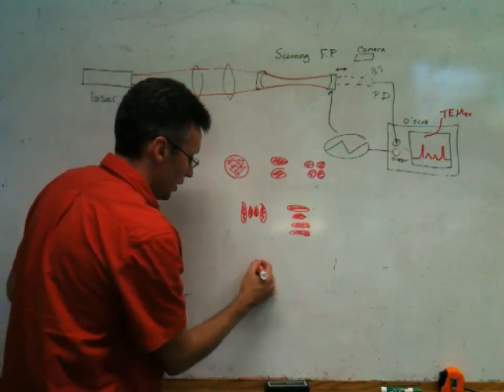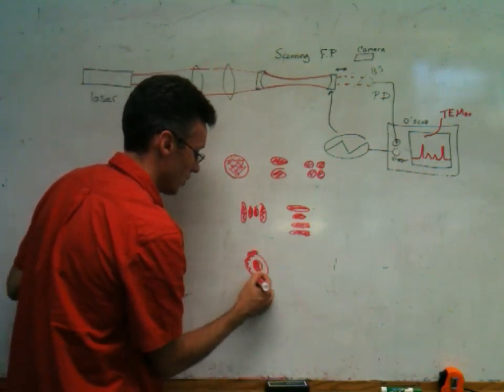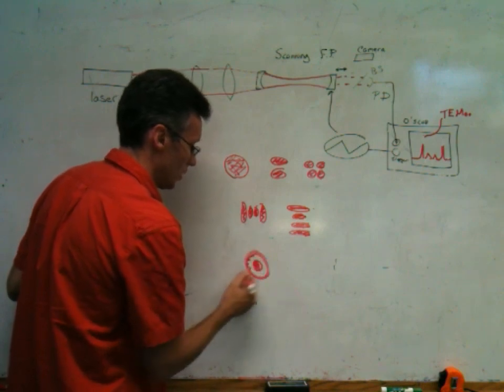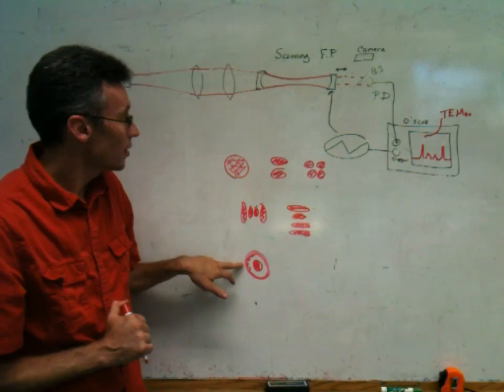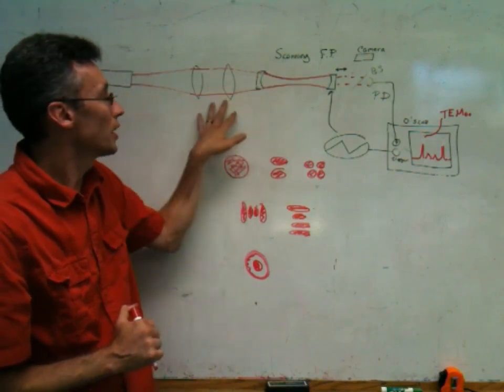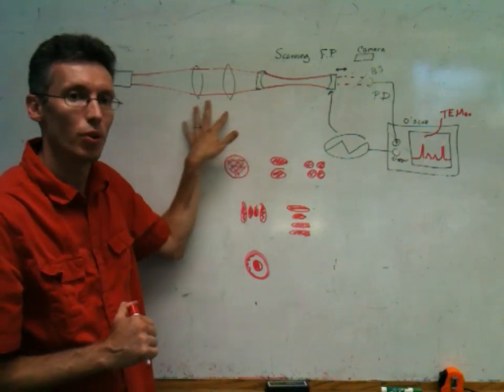And if you see what we call donut modes, something like this, that suggests there's a radius of curvature mismatch, and that the lenses need to be moved or reconfigured.